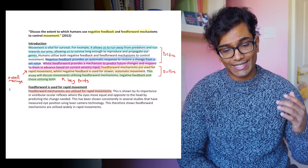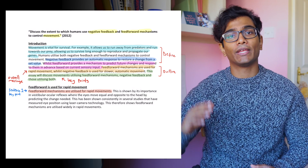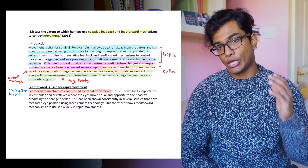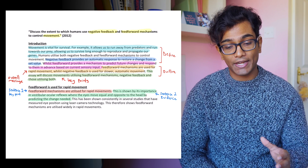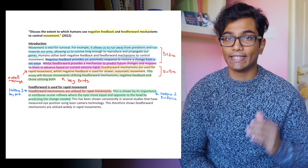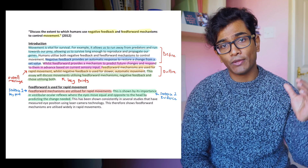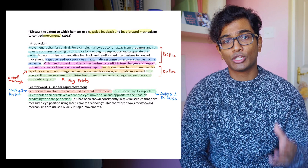What's the best way to structure each paragraph? Use the first sentence to convey the key point. For example: 'Feedforward mechanism is key for rapid movement.' Very short, very snappy — it tells the examiner exactly what this paragraph is going to be about. Then in the second sentence, provide important scientific evidence that backs up the point. For example: 'This is shown by its importance in vestibular ocular reflexes, where the eyes move equal and opposite to the head by predicting the change needed.' Not only have you made the key point but you've backed it up with scientific evidence to add substance.